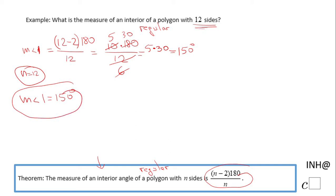You can see here a picture of that polygon. This is a polygon of 12 sides, a regular polygon, right? All these sides are equal.